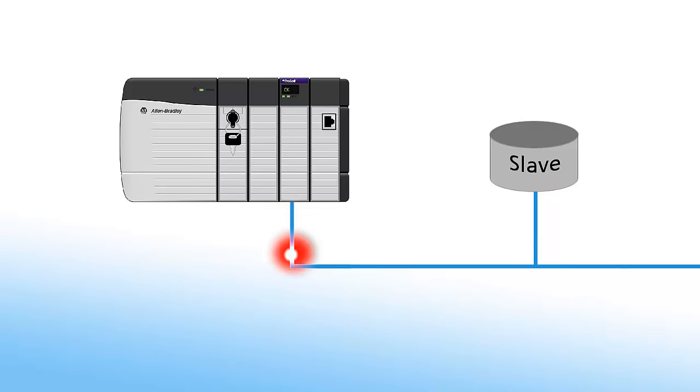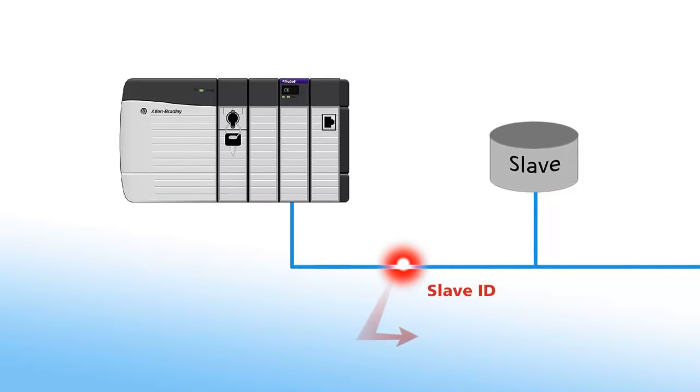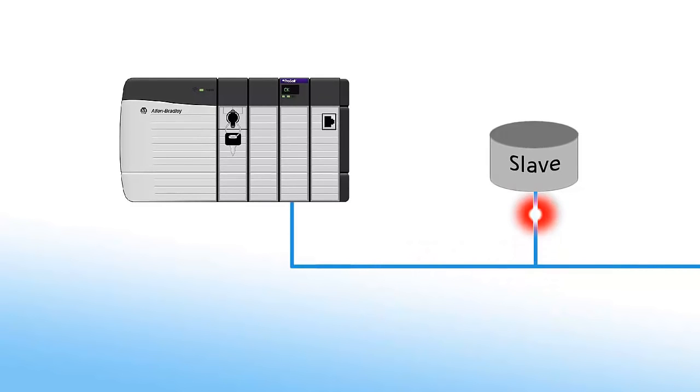To wrap up, we'll take a look at a Modbus RTU message being sent from our master out to a slave device. The message contains the slave ID of the device the command is intended for, the function code to read or write data, and the message data itself. Once the slave receives the command, it will return the requested data to the master in the case of a read command, or it will write the data to its own database and send an echo of the original message back to the master to confirm that the message was received. We hope this video gives you a better understanding of Modbus serial and TCP IP.